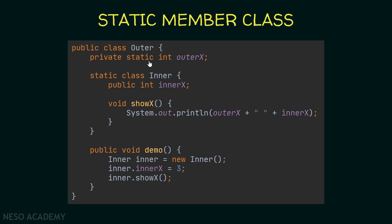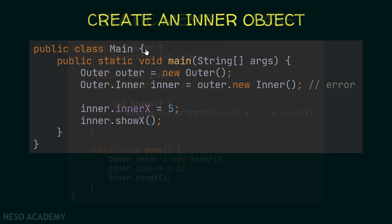Notice that now we can have static members inside the inner class — if you want static members, the inner class must be static. Inside the outer class, nothing changes in the demo method. The difference is outside the outer class. If we try to instantiate the static inner class using an outer object as before, we will get an error, because the static member class is no longer associated with an object — it belongs to the class.